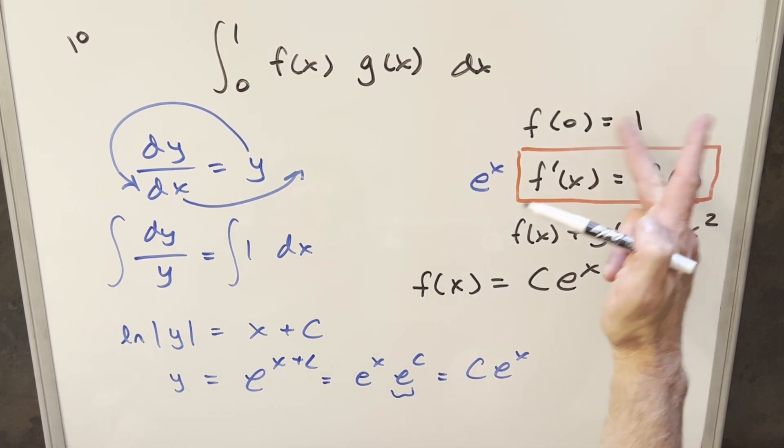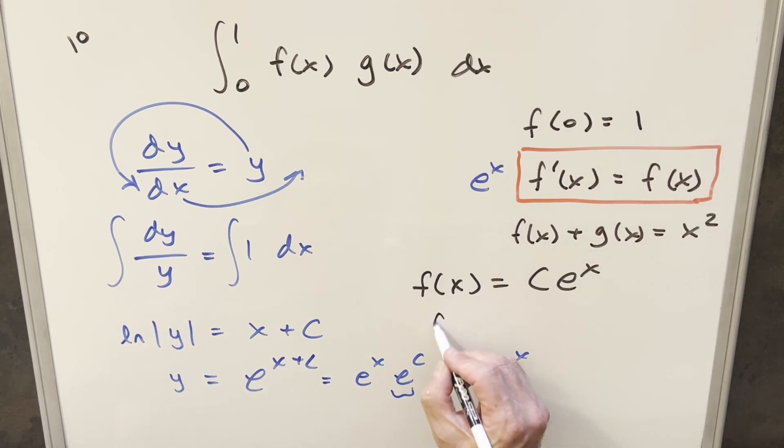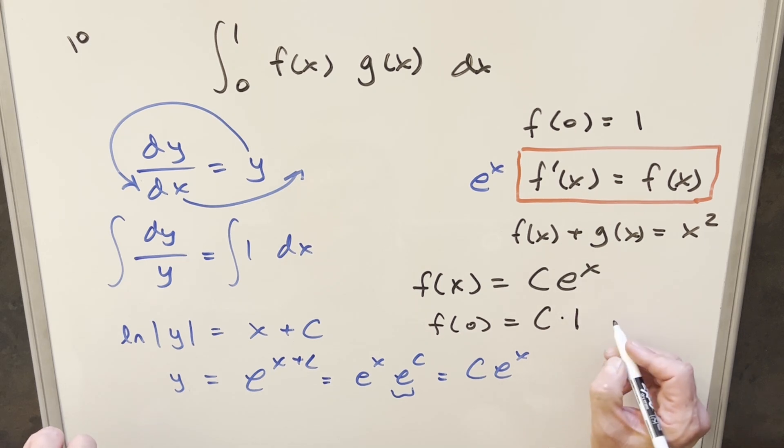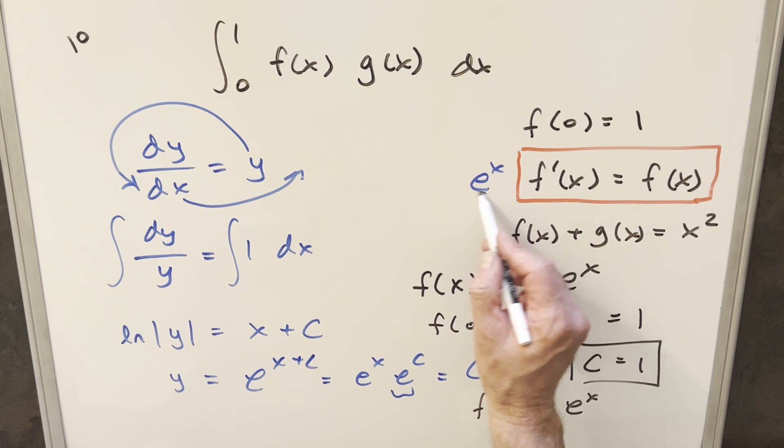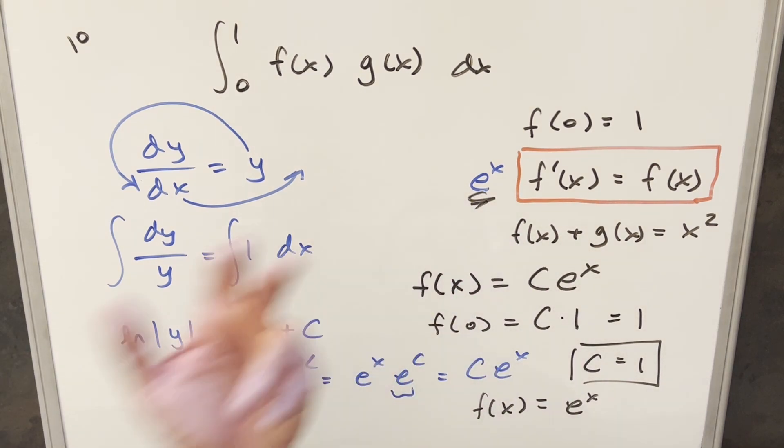We have this initial condition we're given that f at 0 is going to be equal to 1. So if we plug in 0 here, plug in 0 here, we have c times e to the 0, which is just 1. This equals 1. So our c value for this is going to just need to be 1. So then what we have for our f of x value, f(x) is going to be just e to the x, which we knew originally. But it was a good excuse to do a quick differential equation.